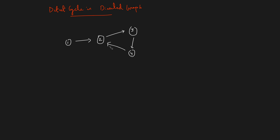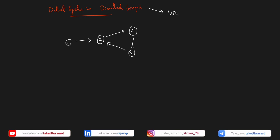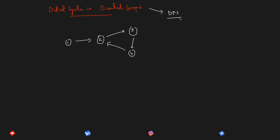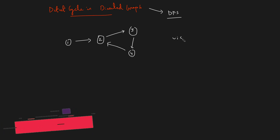In our previous videos, we did learn about how to detect a cycle in a directed graph. Over there, we did learn the technique using the DFS algorithm — the depth-first search algorithm — where we used a couple of arrays: one was the visited array, while the other one was the DFS visited array.